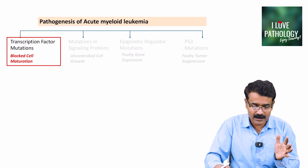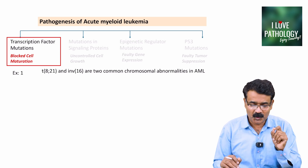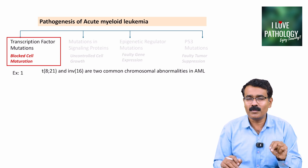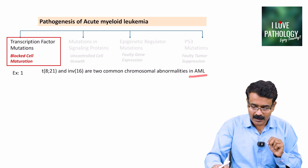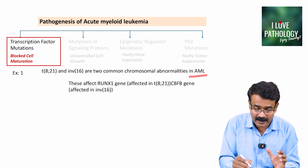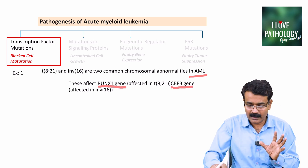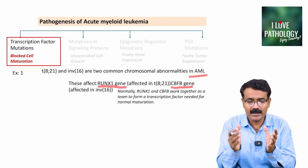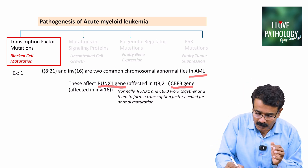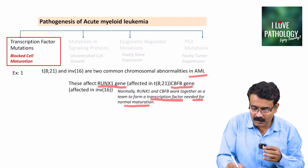What are these transcription factor mutations? Two examples: first, translocation involving chromosomes 8 and 21, and inversion of chromosome 16 — the two most common abnormalities in AML. These affect the RUNX1 gene and CBFB gene. Normally, RUNX1 and CBFB work together as a team to form a transcription factor needed for normal maturation.